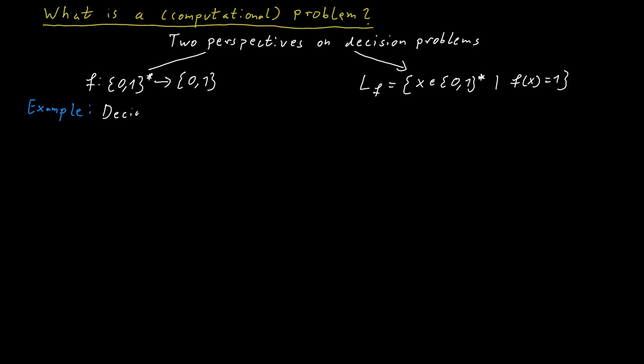Here's an example. A decision problem might be to determine whether a positive integer is even or not. So the problem would be f(x) is equal to 1 if x mod 2 is equal to 0 and is 0 otherwise. The corresponding language describing the same decision problem could be written as Lf is equal to the set of all x where x is a natural number and x mod 2 is equal to 0.